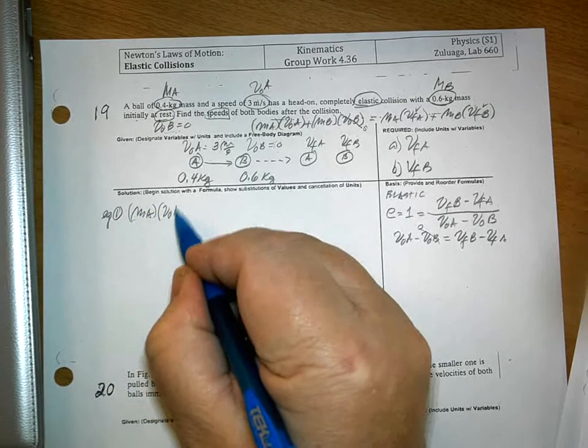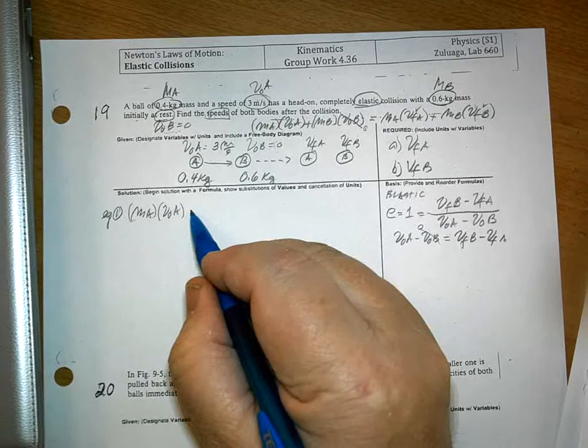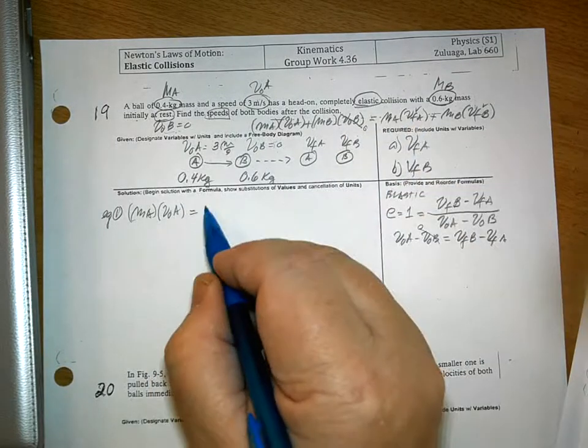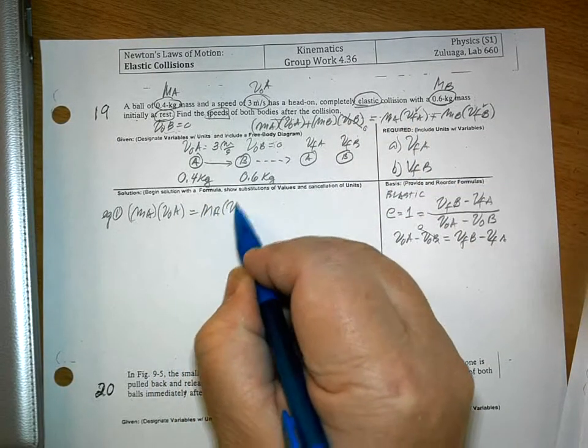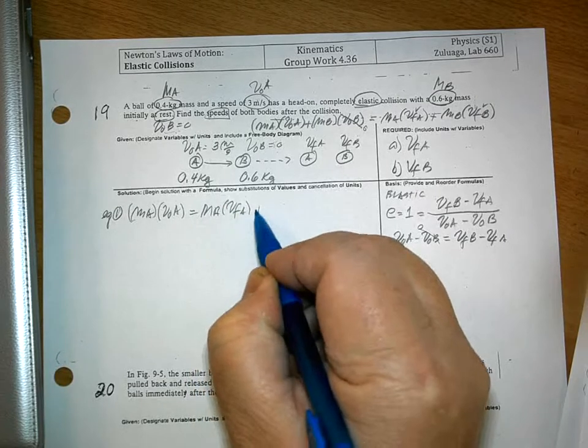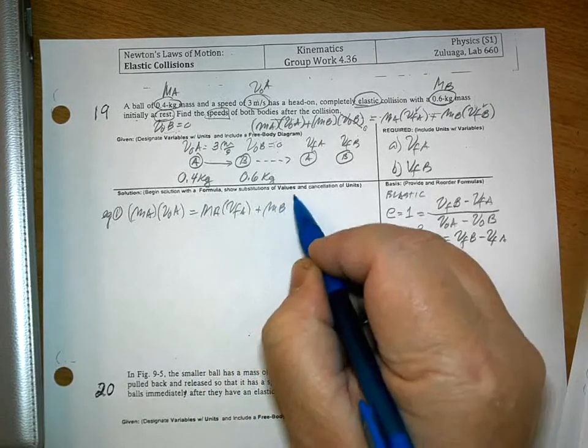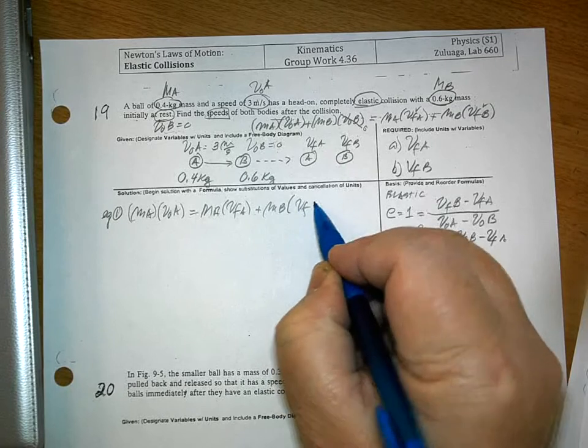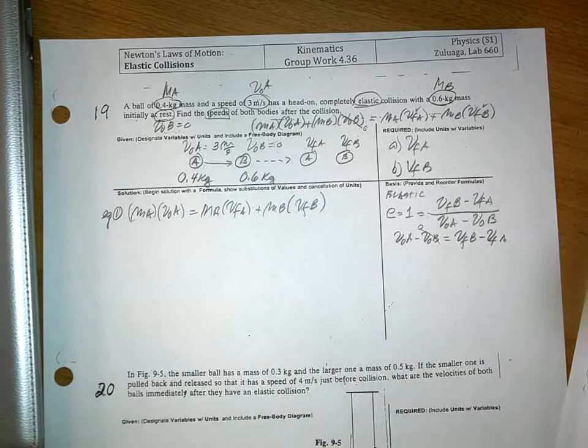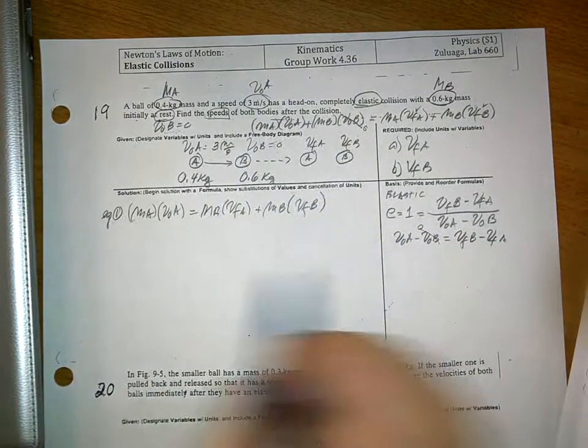Equation 1: MA VOA is equal to MA VFA plus MB VFB. And then, this is our equation 2.